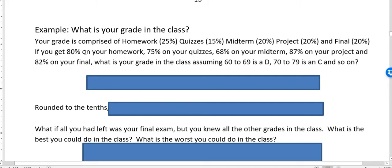And it tells you here, you got an 80% on your homework, 75% on quizzes, 68% on your midterm, 87% on your project, and 82% on your final. So what's your grade in the class, assuming that a 60 to 69 is a D, 70 to 79 is a C, and so forth.